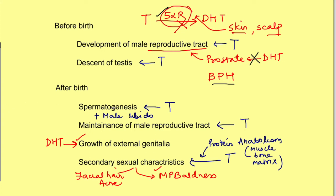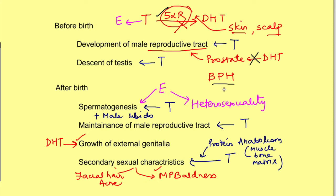Testosterone can also act after getting converted to estrogen. Estrogen is very important for spermatogenesis — it is present in the epididymis and is responsible for fluid resorption there. Estrogen is also responsible for attraction of males to the opposite sex; it acts on brain cells and is responsible for heterosexuality. Finally, estrogen is also responsible for closure of the epiphysis — testosterone is converted to estrogen in bone, so while testosterone directly causes bone growth, closure of the epiphysis occurs when testosterone is converted to estrogen.